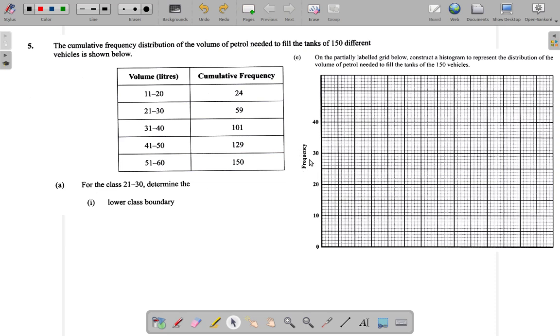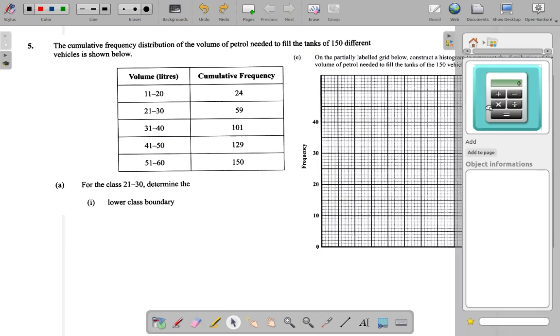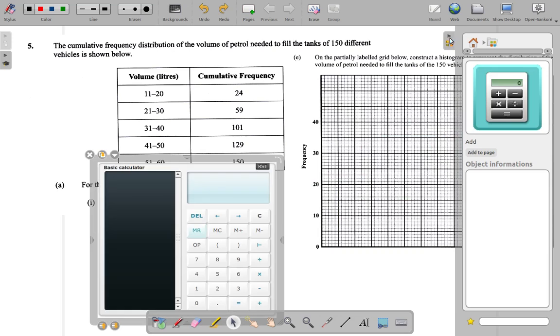Now remember, here it doesn't say cumulative frequency, it says frequency. So we're going to have to find out the recorded value in each section here. Let's quickly look at what these could be.